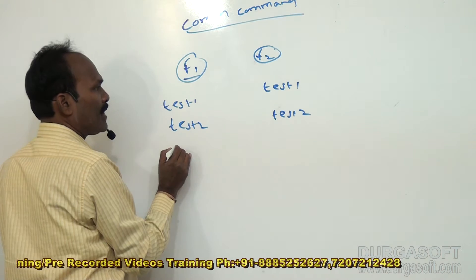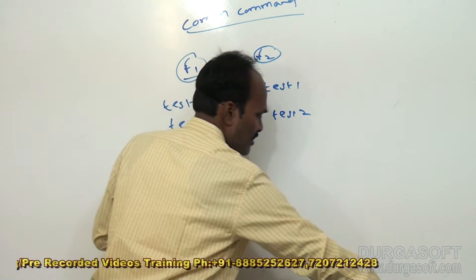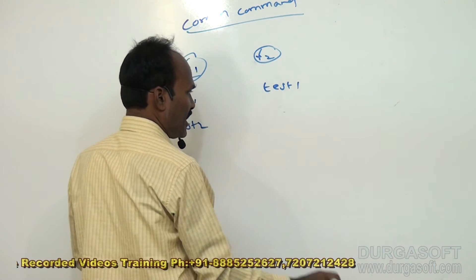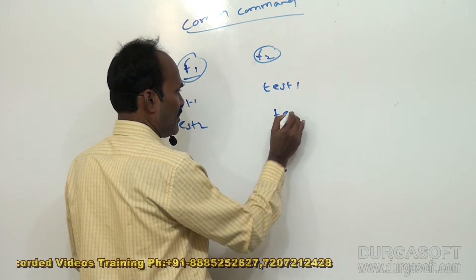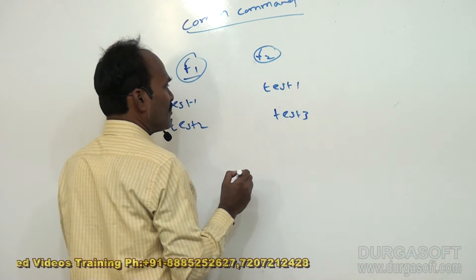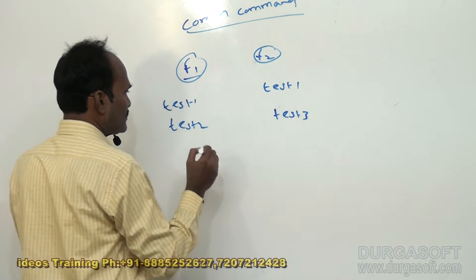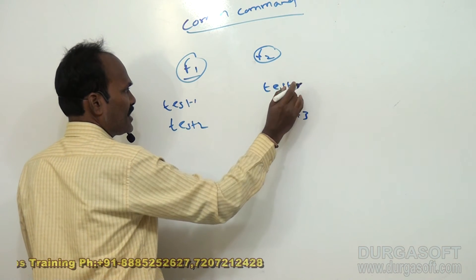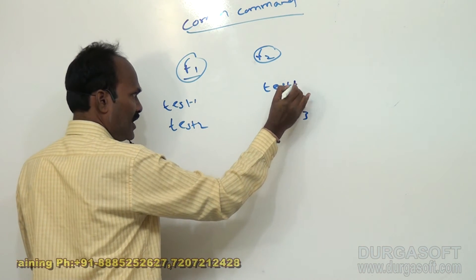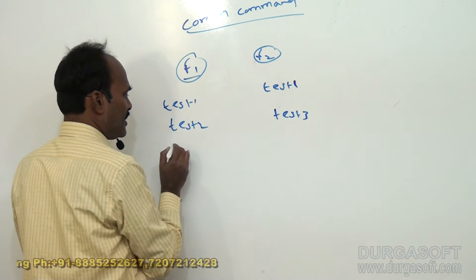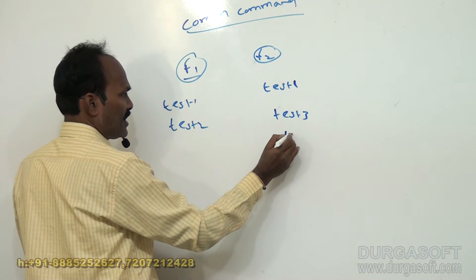F2 also has test1 and test2. Here I have test2, test3, and this is test1, test3. And this will have test4.